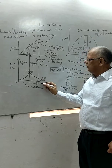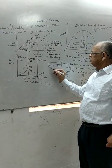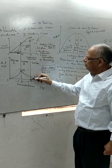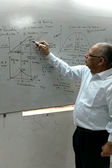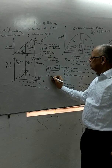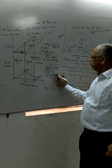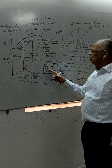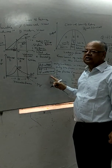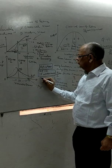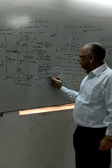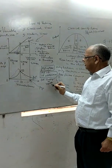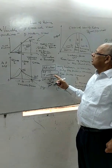Marginal production is zero at point M. When marginal production is zero, total production is at its maximum. Therefore, producer's equilibrium is obtained when marginal production is zero and total production is maximum. This occurs at OM employment of the variable factor.